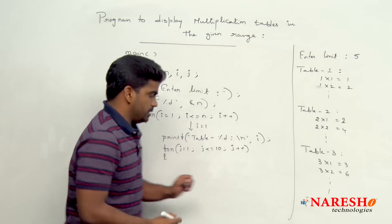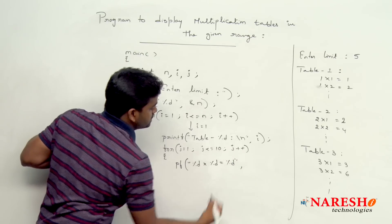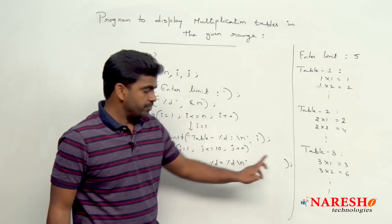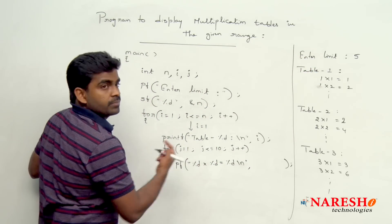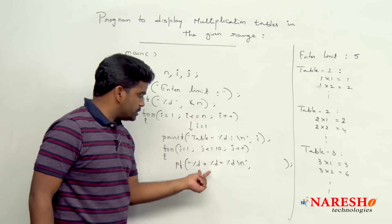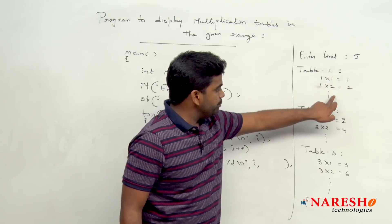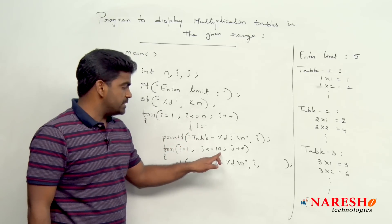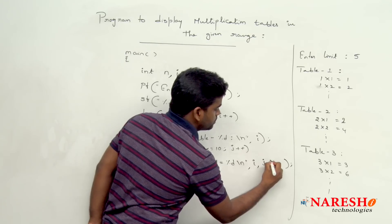Inside the inner loop, we display: printf 'percentage d multiplied with percentage d equal to percentage d', followed by a newline slash n. The variables to display are: the table number i, then j (which repeats from 1 to 10), and then the result i multiplied by j.